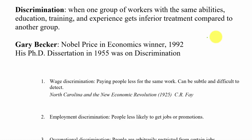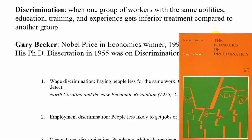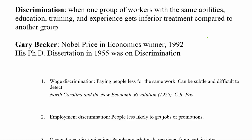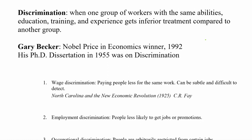Gary Becker wrote a book based on his dissertation simply called 'The Economics of Discrimination.' He was famous for taking economic principles — costs, benefits, utility, supply and demand — and applying them to all kinds of interesting things nobody before him thought could be done, such as the economics of the family: how people decide who to marry and how many children to have. When it comes to discrimination, we typically boil the types down into a few different categories.